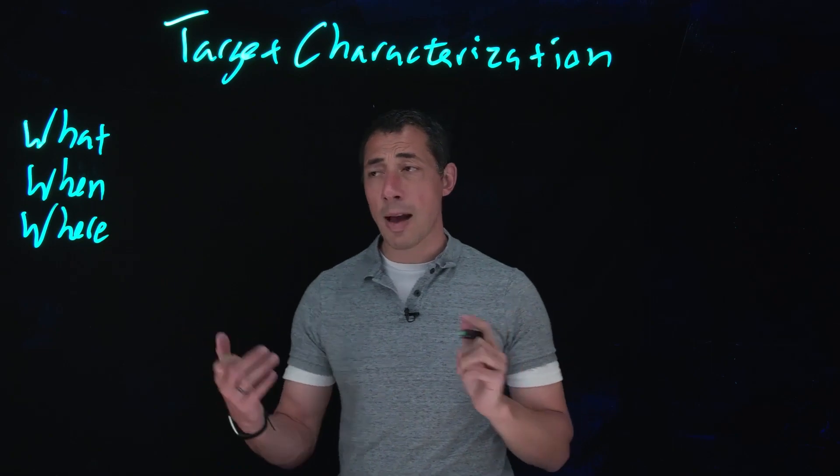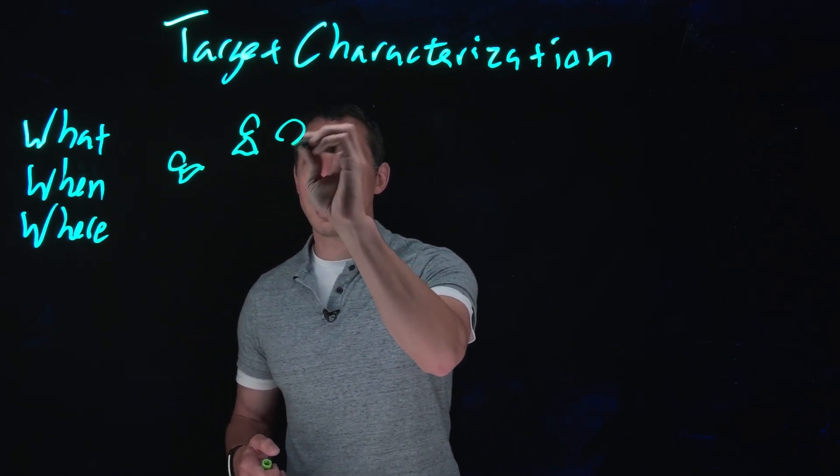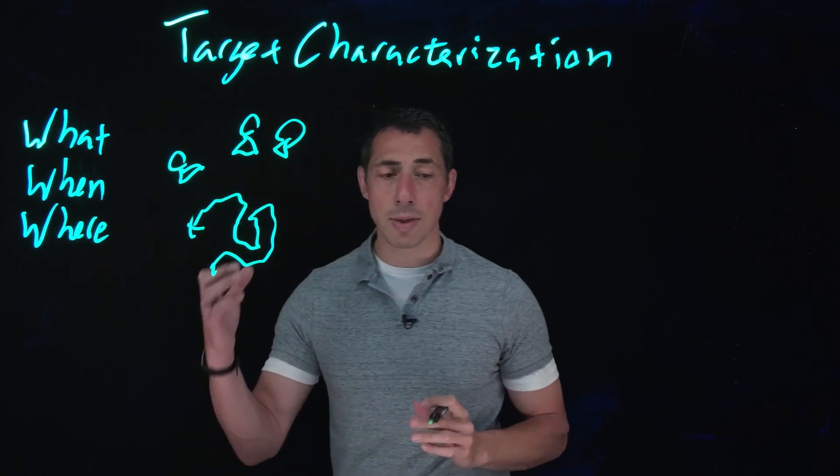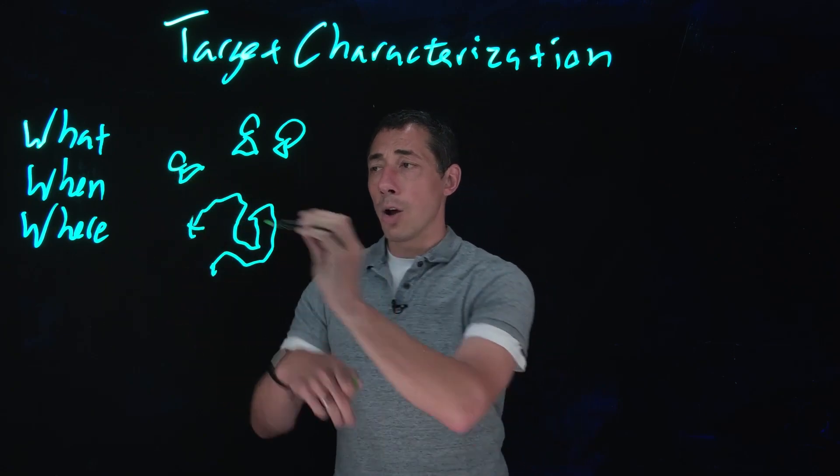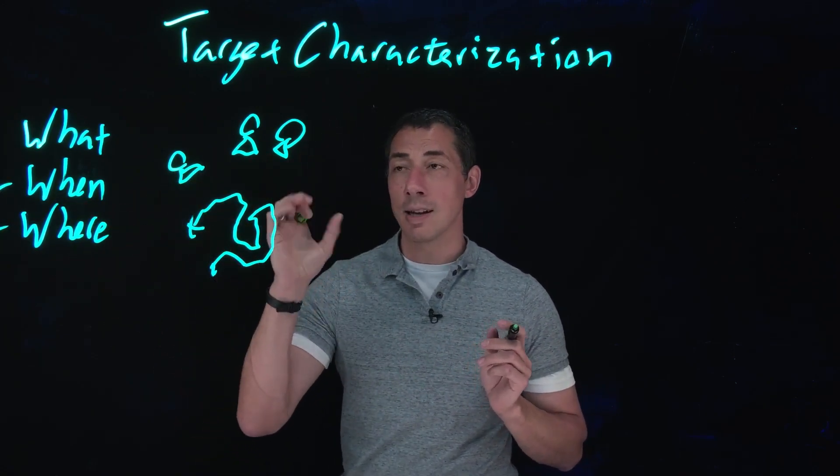So for an imaging type of application, I might have a number of different cameras looking at some target of interest and that target of interest could be moving around and it could be doing a whole bunch of different things. And the when and the where, that's easy, what position is it in and what time.